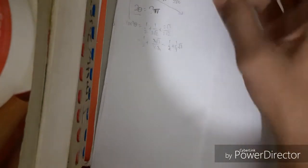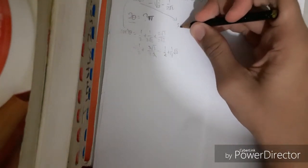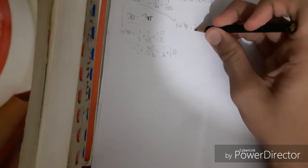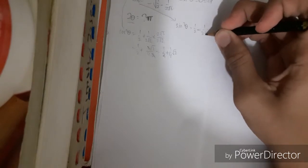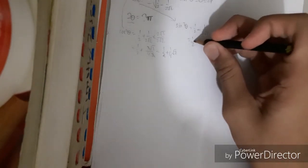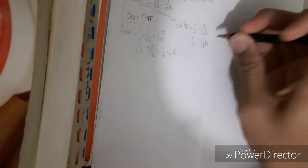For sine squared theta, we also do it. Sine squared theta is equal to 1 half minus 1 over 2 root 2, and this is equal to 1 over 2 minus 1 fourth root 2.